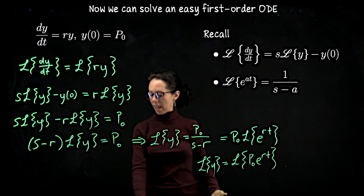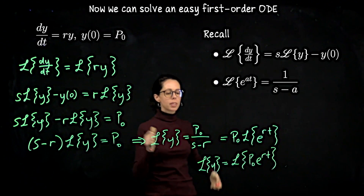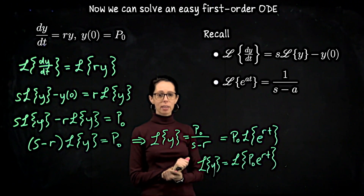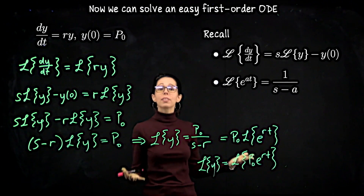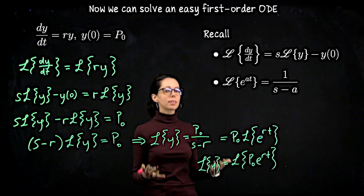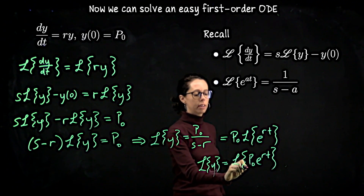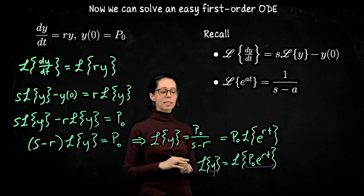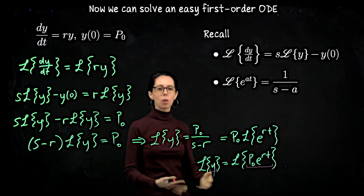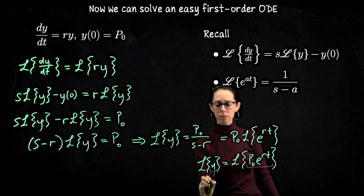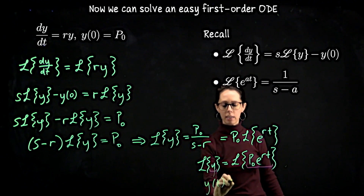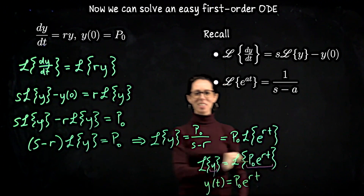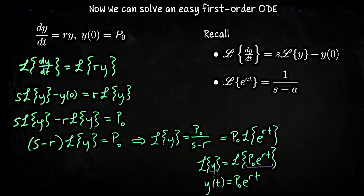For continuous or piecewise continuous functions, the Laplace transform is unique. So if two continuous functions have the same Laplace transform, they must be the same function. Therefore y must be p naught e to the rt. In other words, the Laplace transform is invertible — we can undo it. The conclusion is that y of t equals p naught e to the rt, just as we always knew.